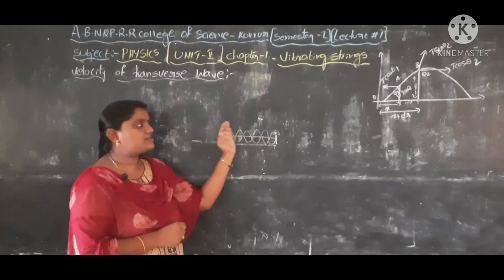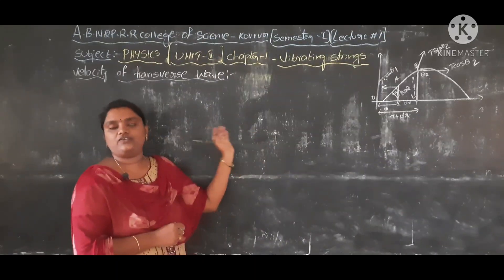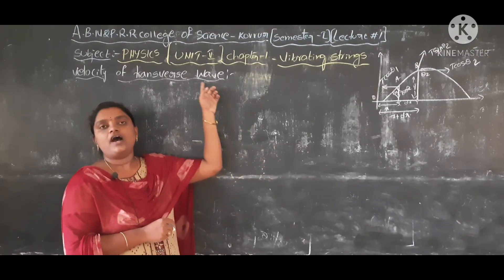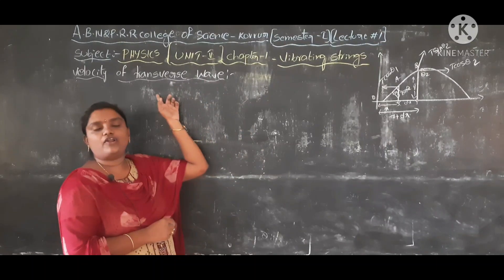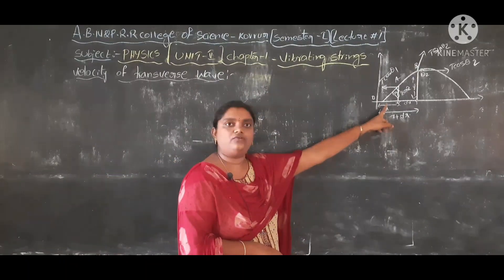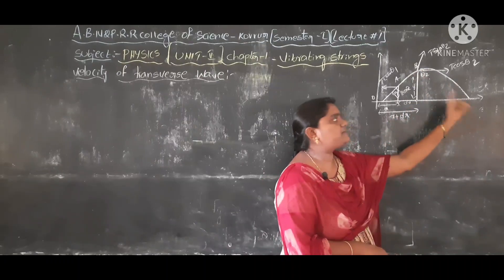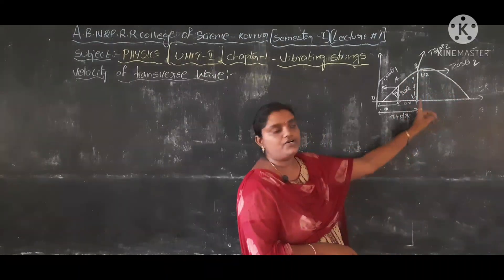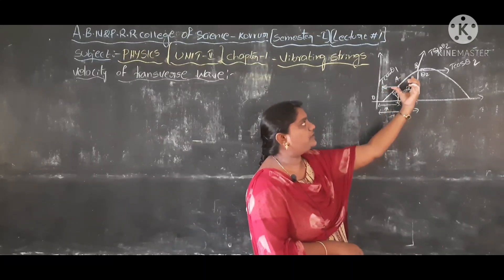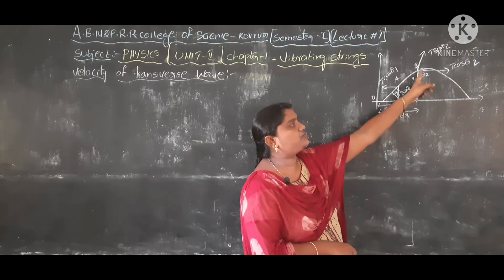The wave developed in the string produces oscillations, and transverse waves are developed. We will find the velocity of that transverse wave. To find the velocity, we consider the upper displacement of the transverse wave and consider a small elemental segment AB in the string. Let displacement be y.